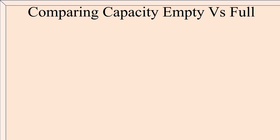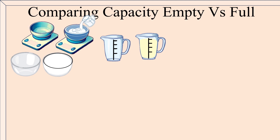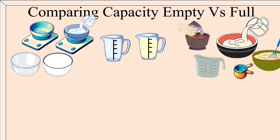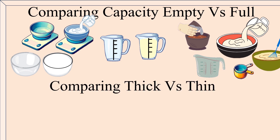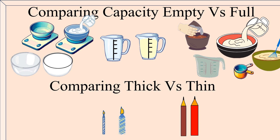Comparing capacity — empty versus full. Capacity is how much something can hold. For example, a cup can be empty, completely full, or partially full depending on how much liquid it can hold. Next is comparing thick versus thin — thickness can be measured by width or diameter. For example, a thick candle has a larger diameter than a thin candle, just like how one pencil might be thicker than another.